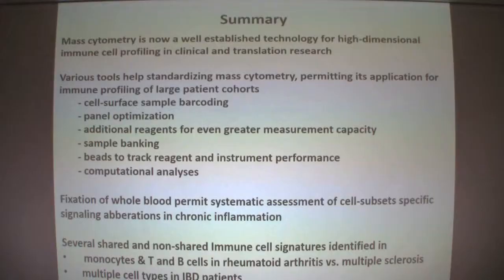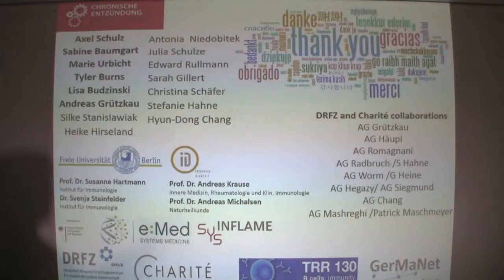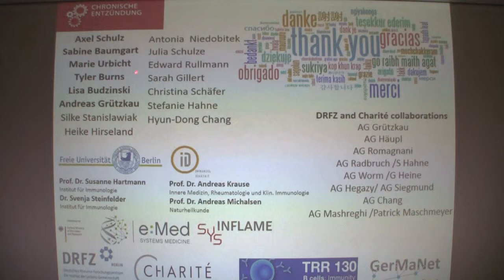In summary, mass cytometry is a well-established technology now available for high-dimensional immune cell profiling in chronic inflammation. I introduced tools we developed — very popular in the field — to increase and improve the quality of mass cytometry data and make it suitable for bioinformatics. I gave some first insights on how we use mass cytometry in clinical and translational research. I thank all the people who did this work: Axel Schulz, Sabine Baumgart, Marie Ulrich, Tyler Burns for bioinformatics, Lisa Budzinski for the beads, and all internal and external collaborators.